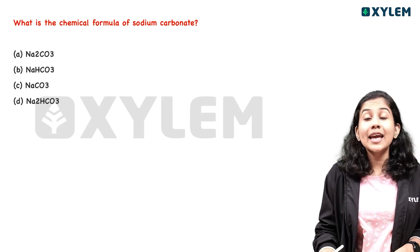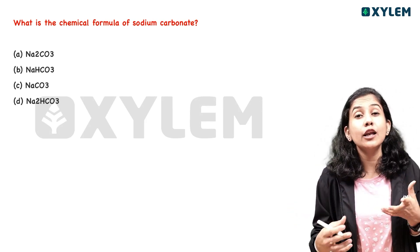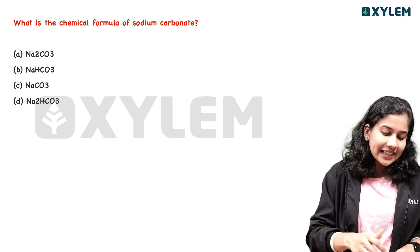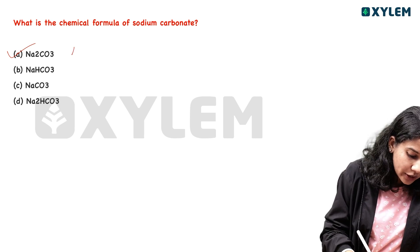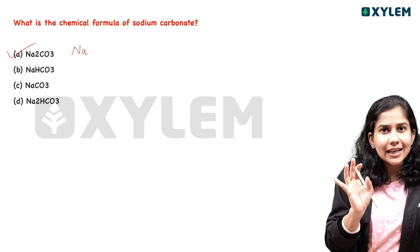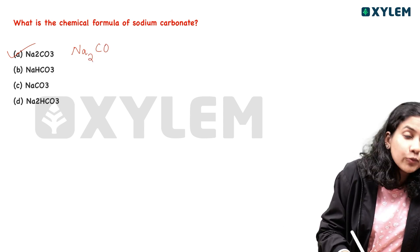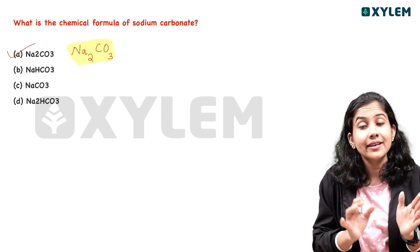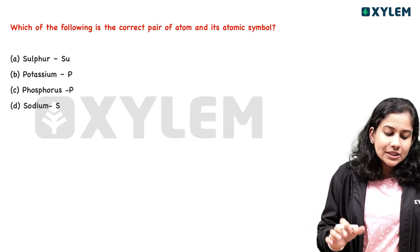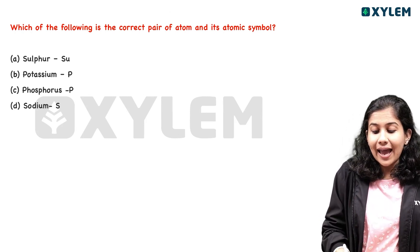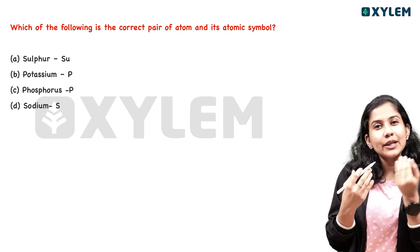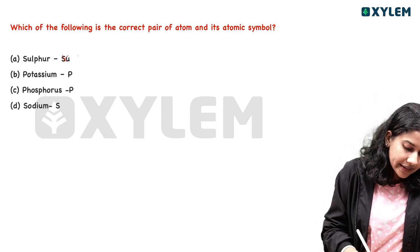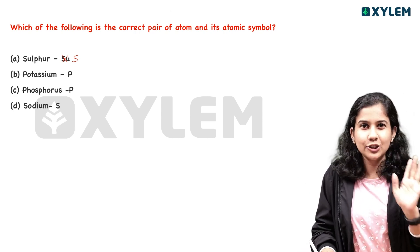Next question: What is the chemical formula of sodium carbonate? The answer is Na₂CO₃ — that is option A. What is the name of Na₂CO₃? That is our question. We are using sulfur as S. Potassium — yes, that is wrong to use P for potassium from its English name. We are using sulfur as S.